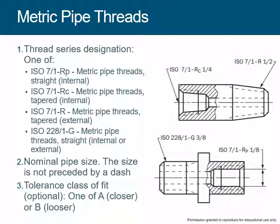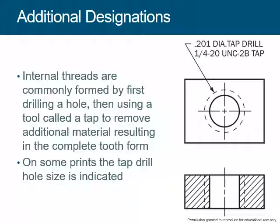For taper pipe threads, you write the nominal size, threads per inch, and you must indicate the type — whether it's a standard seal (NPT) or dry seal (NPTF). For metric pipe threads, same logic: show the designation, type of thread, and size. Finally, there's an example showing a quarter-20 coarse thread with tolerance class, specifying to pre-drill with a tap drill diameter and then tap.